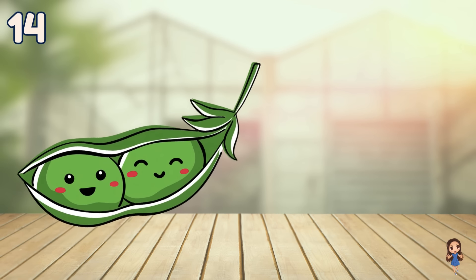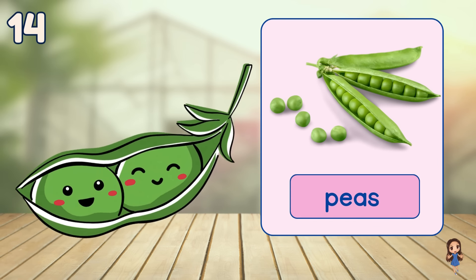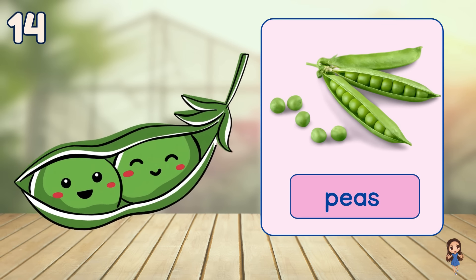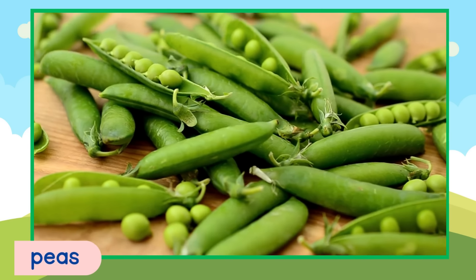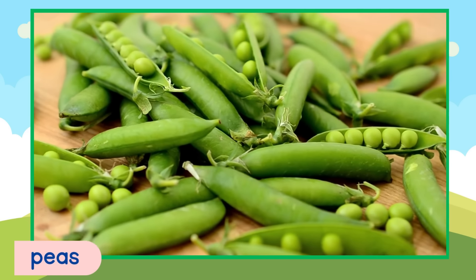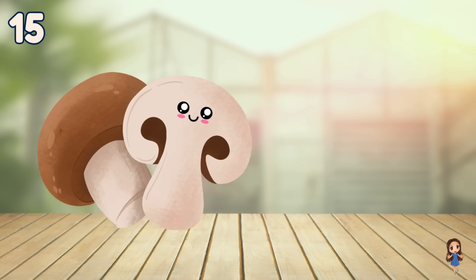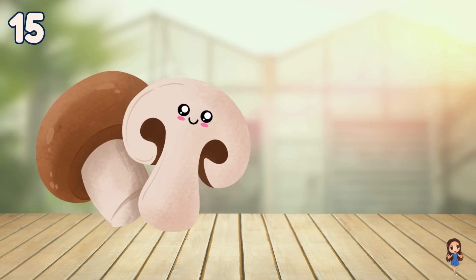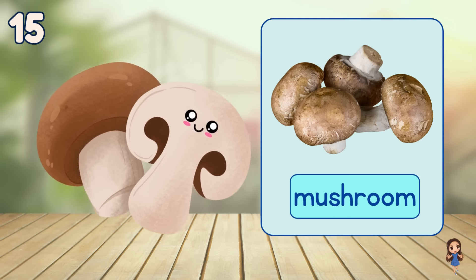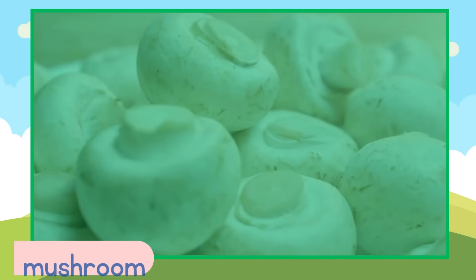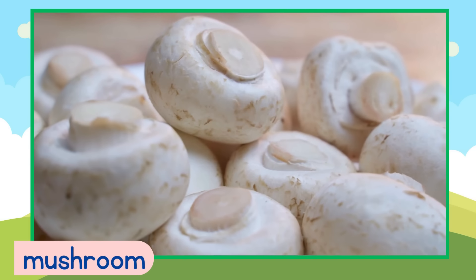What vegetable is this? Peas. These are peas. What is this? Mushroom. It's a mushroom.